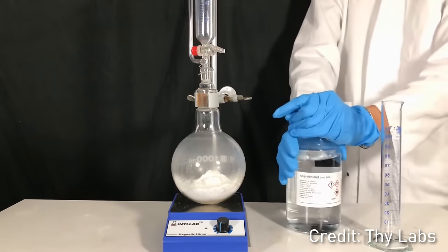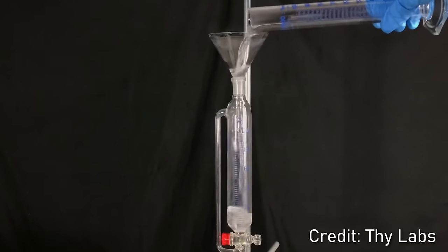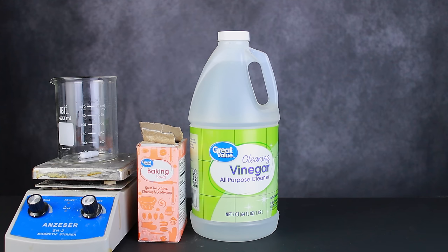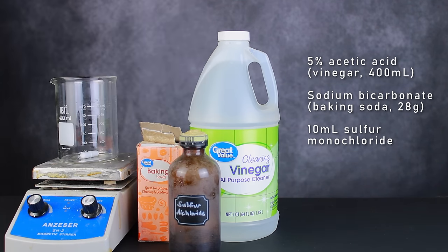Acetic anhydride can be synthesized in a number of ways, but most of the pathways require inaccessible reagents like acetyl chloride or dangerous setups like a ketene lamp. The pathway I'll be sharing, however, is highly accessible and not excessively risky, requiring only vinegar, baking soda, and a healthy dose of nasty sulfur chlorides.